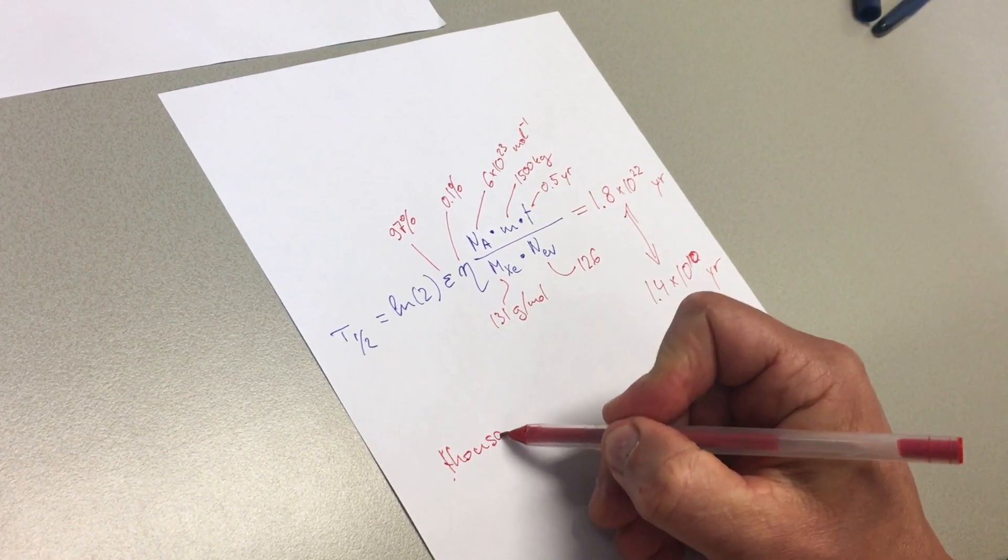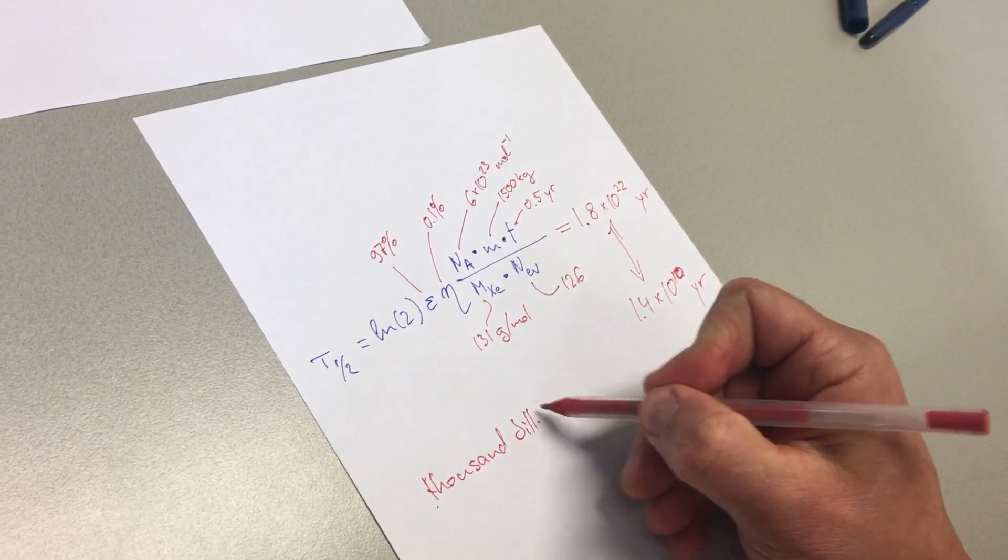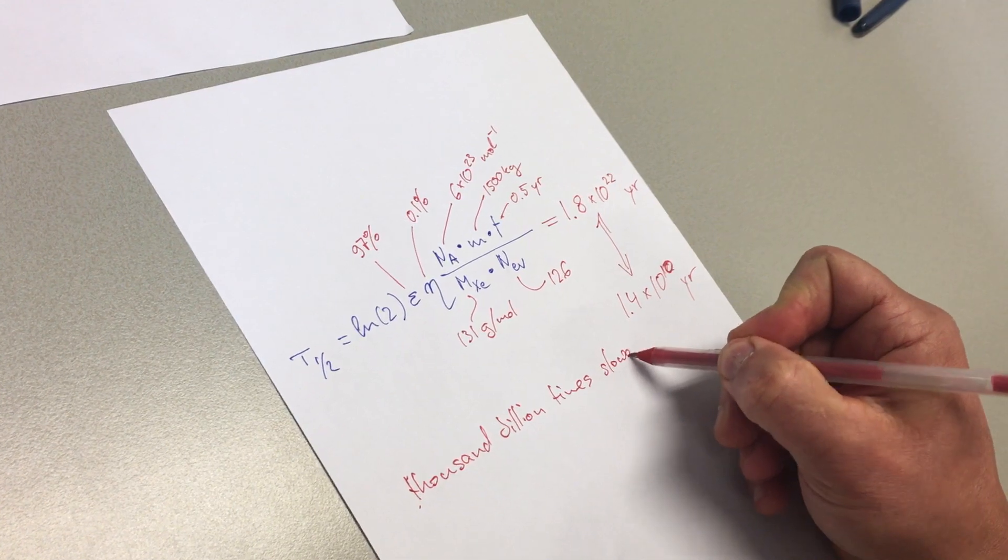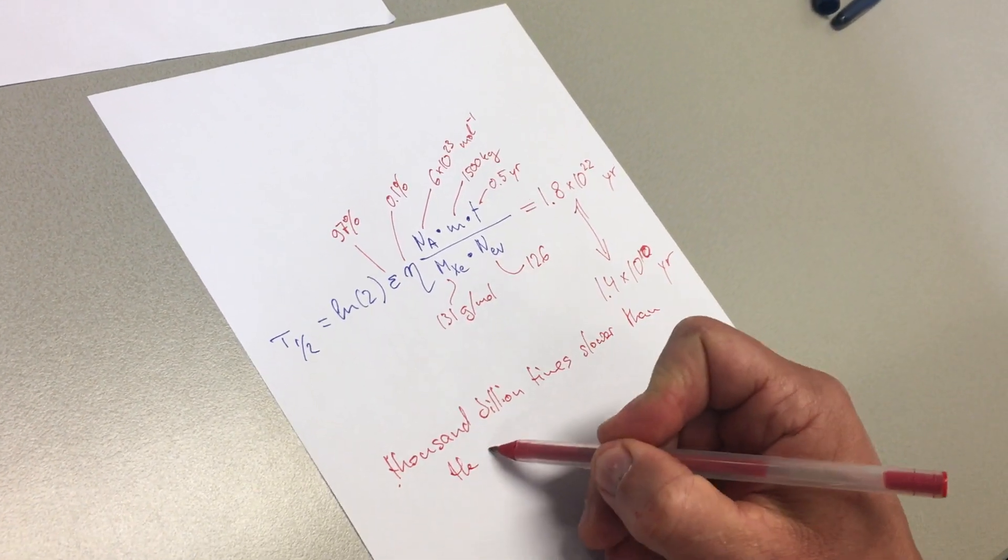It's about a thousand billion times slower than the age of the universe.